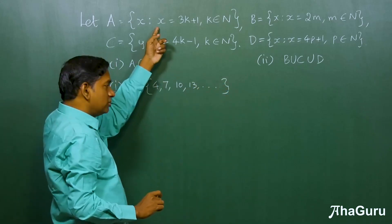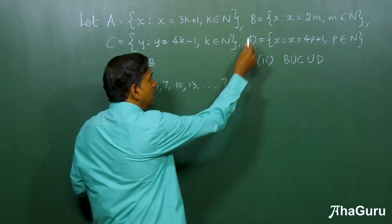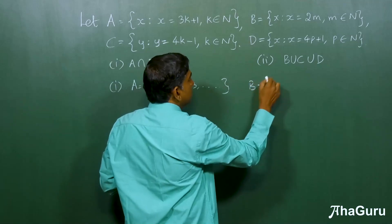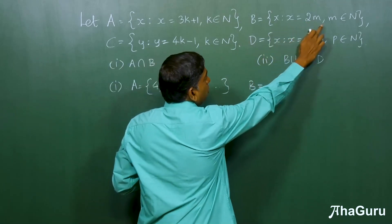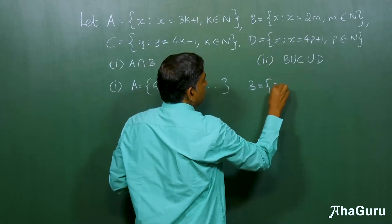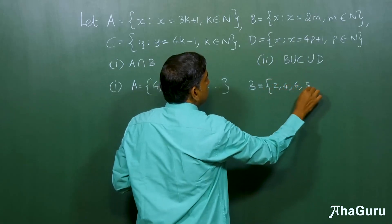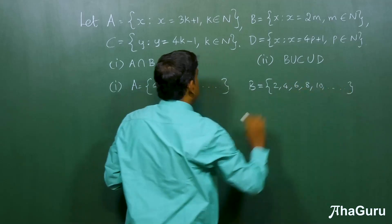This is also the same set, this is just the roster form. Similarly, B is the set of all even numbers, because x is 2m, where m belongs to n. So you get 2, 4, 6, 8, right?